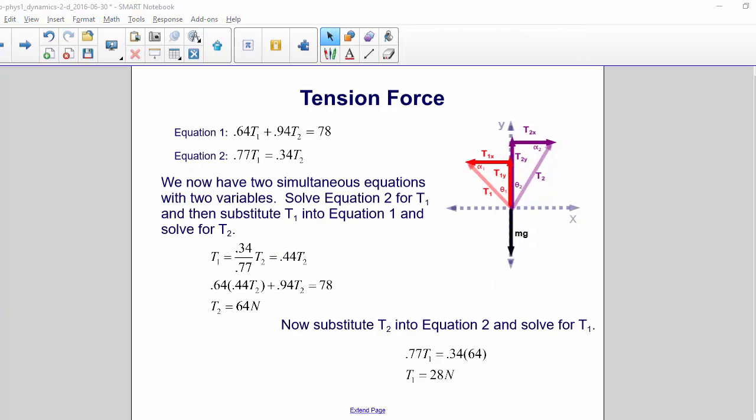We now have two simultaneous equations with two variables. Solve equation 2 for T1, and then substitute T1 into equation 1, and solve for T2. And so we get T2 equals 64 newtons.